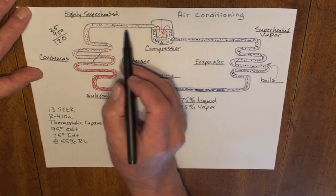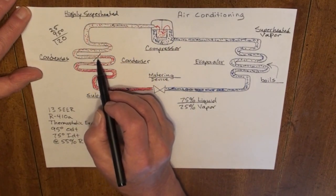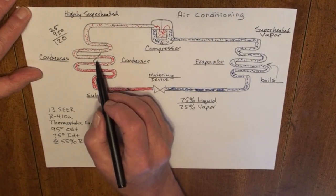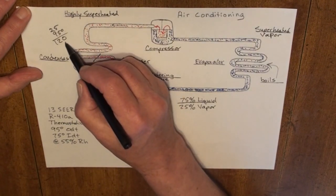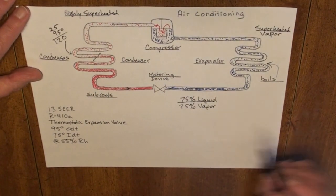So once we reject all of our superheat, a change of state begins to take place at 120 degrees Fahrenheit.